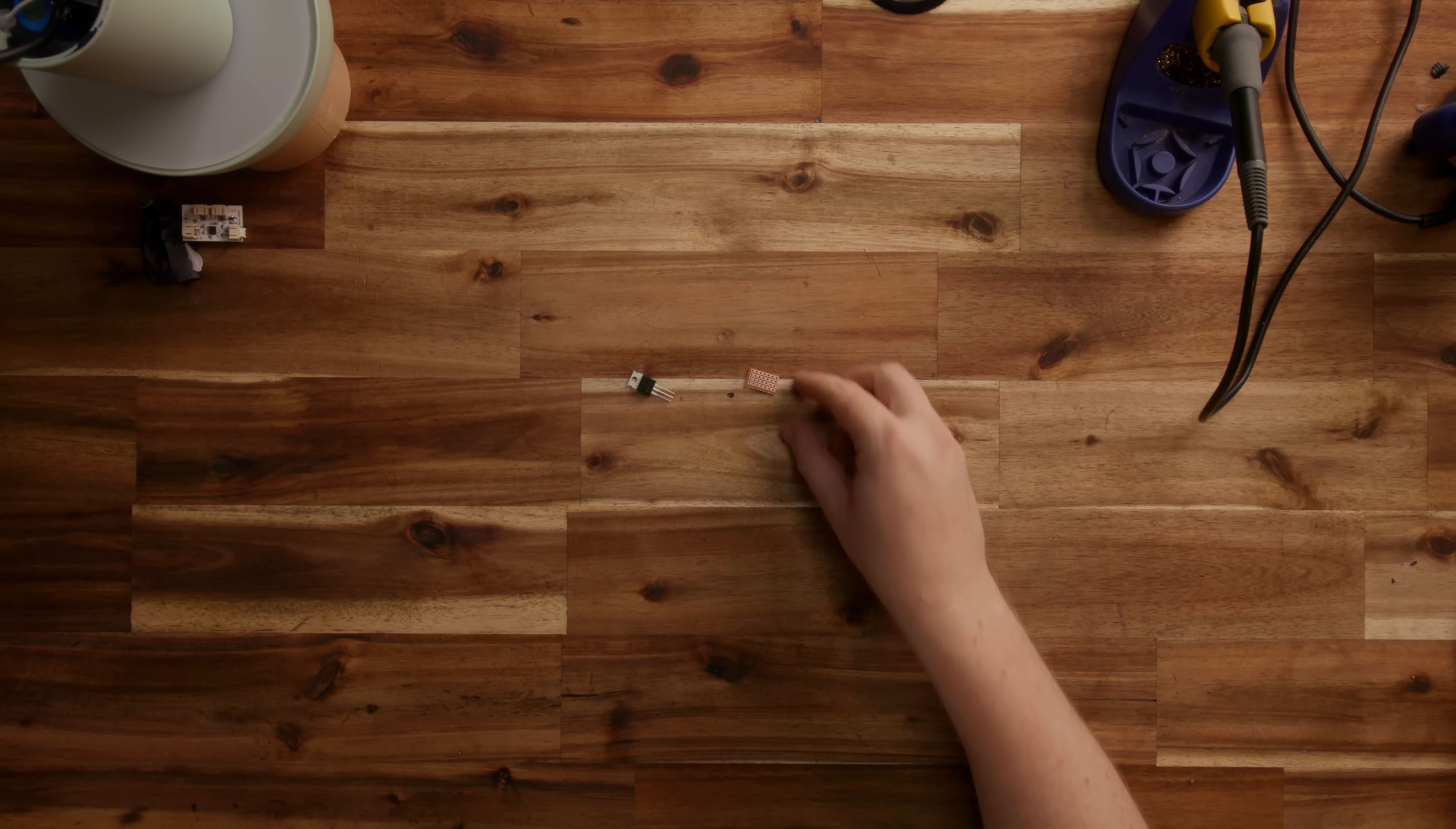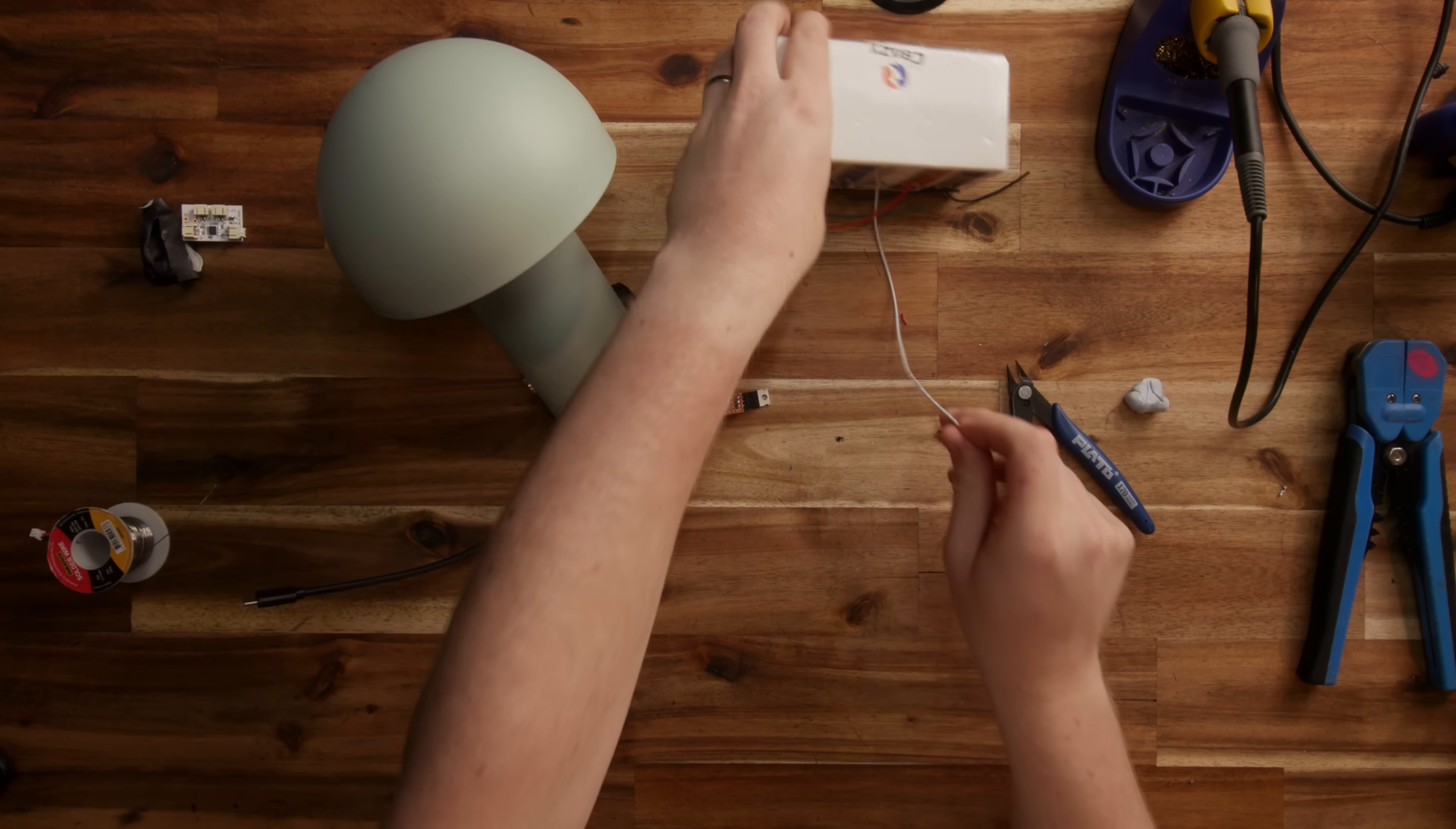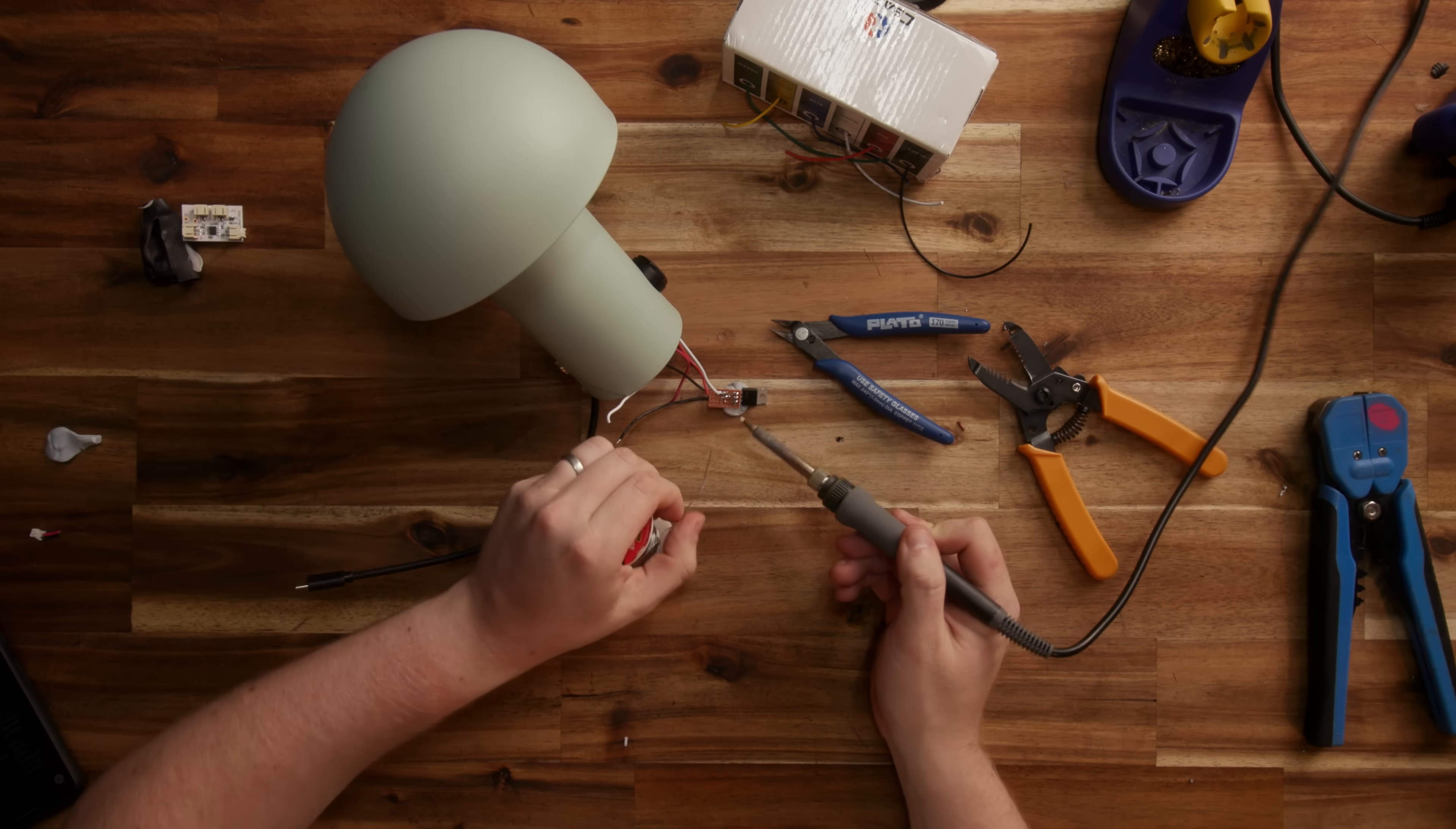Next I installed the MOSFET on a piece of stripboard and wired the LED, battery ground, and signal wires to the appropriate pins on the stripboard and the ESP. For those of you wanting to replicate this at home, I'll include a wiring diagram in the post on my website.